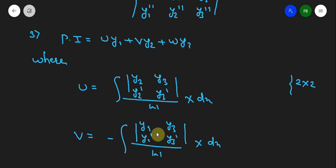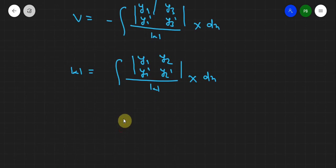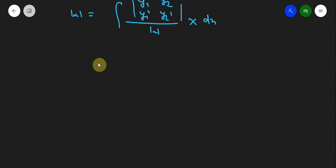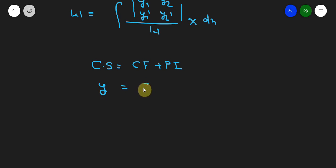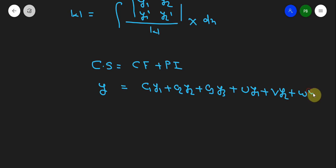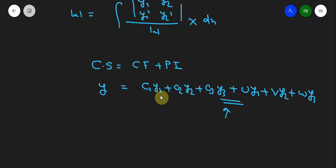Evaluating that equation gives us the particular integral. Finally, the complete solution is complementary function plus particular integral: y = C1·y1 + C2·y2 + C3·y3 + U·y1 + V·y2 + W·y3. This is the solution of a third order differential equation by variation of parameters. We just need to find y1, y2, y3, u, v, w from the given differential equation and substitute.